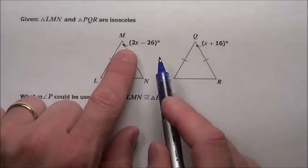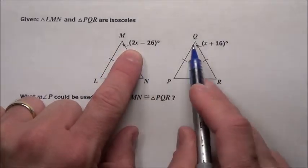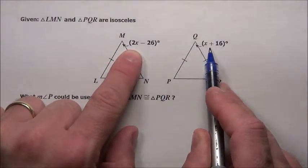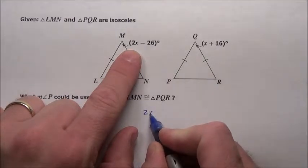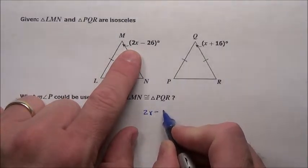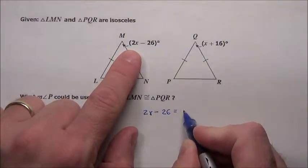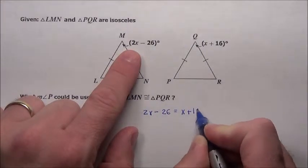Well, if they're exactly the same, the most obvious thing is we know this 2x minus 26 equals this x plus 16. So I know right away that 2x minus 26 is going to have to come out to equal this x plus 16.